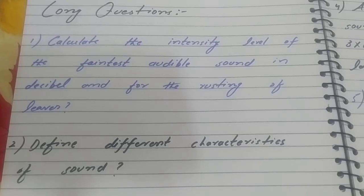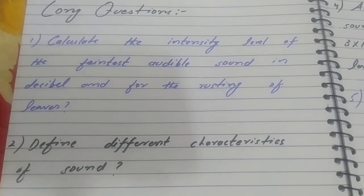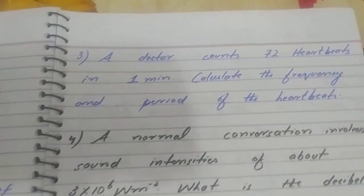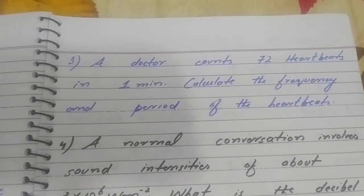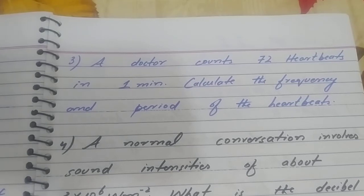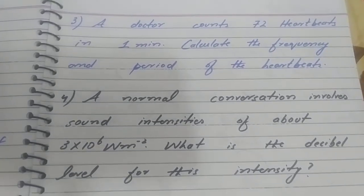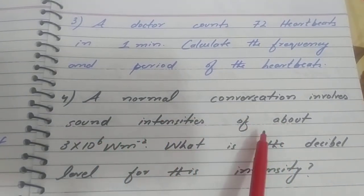Question two: define different properties or characteristics of sound. Question three: a doctor counts 72 heartbeats in one minute — calculate the frequency and time period of the heartbeat.